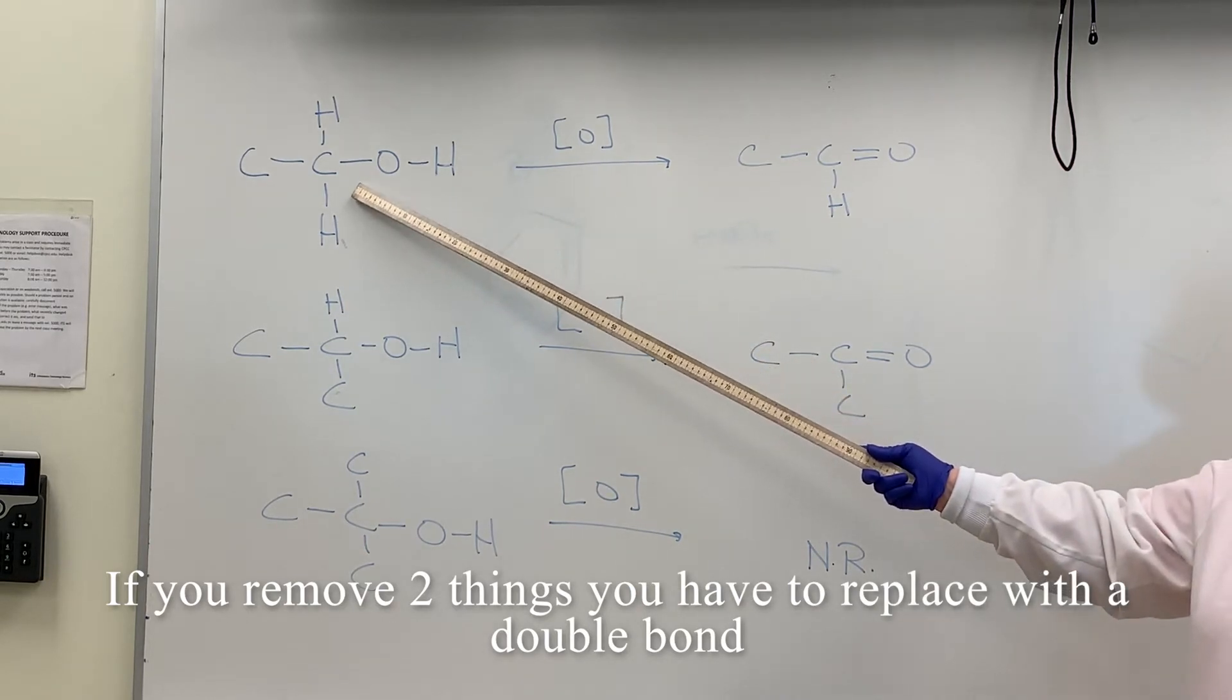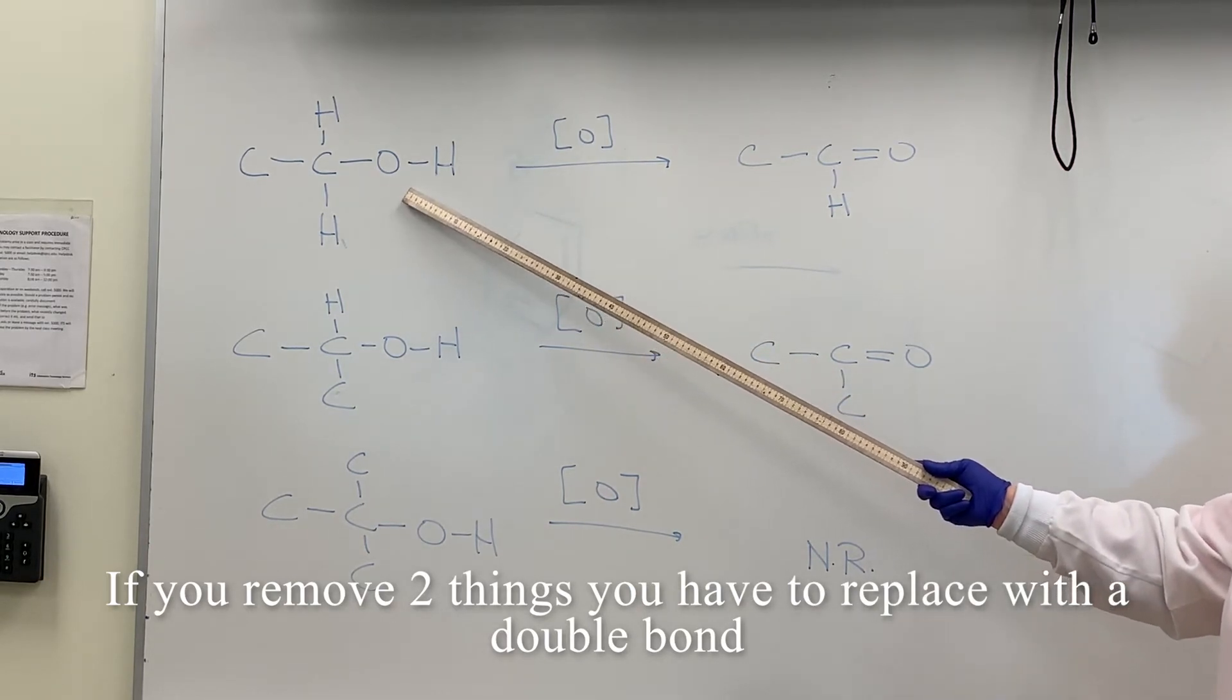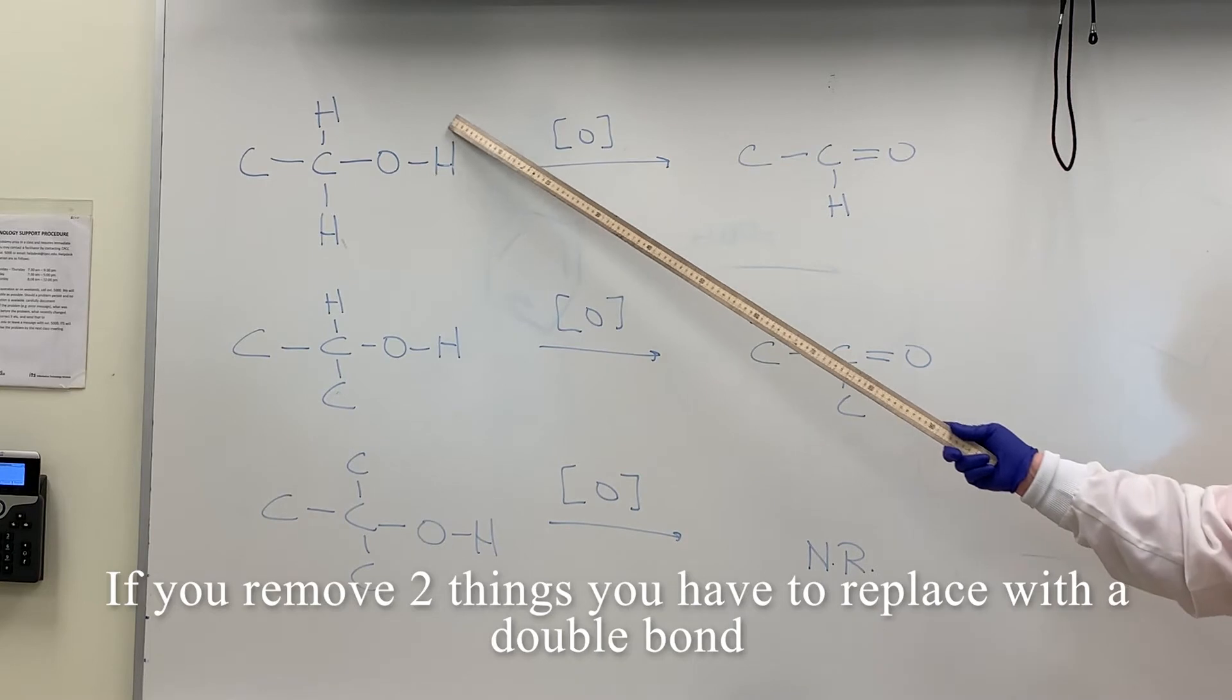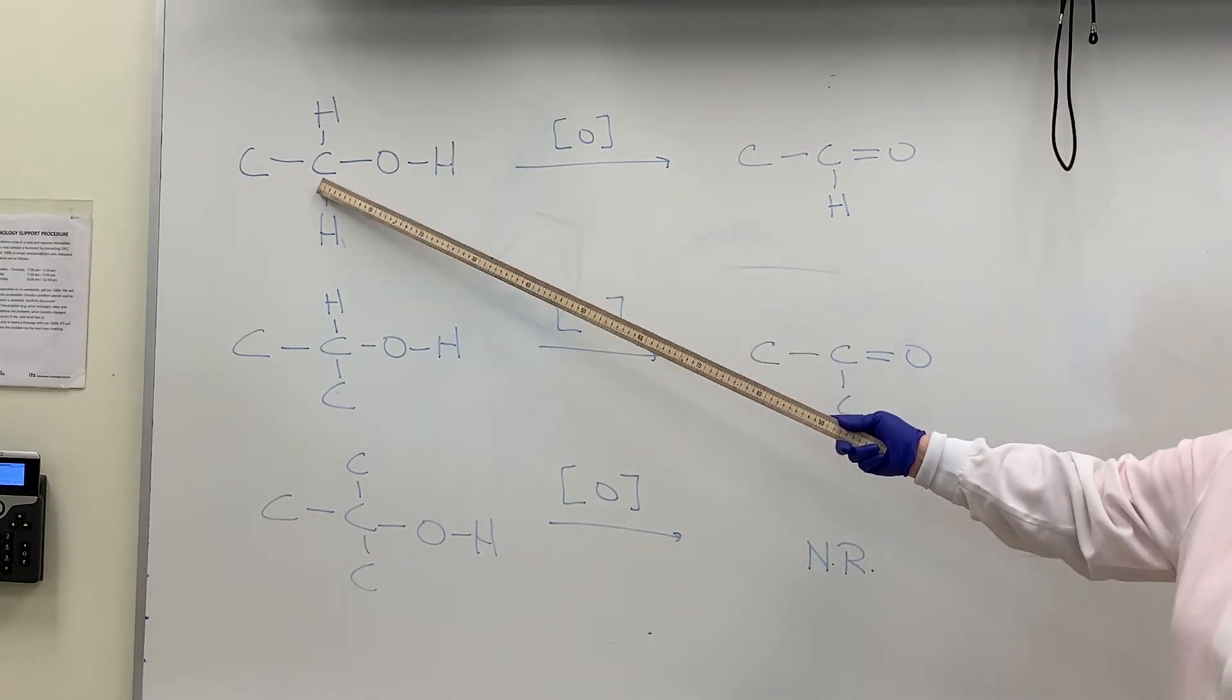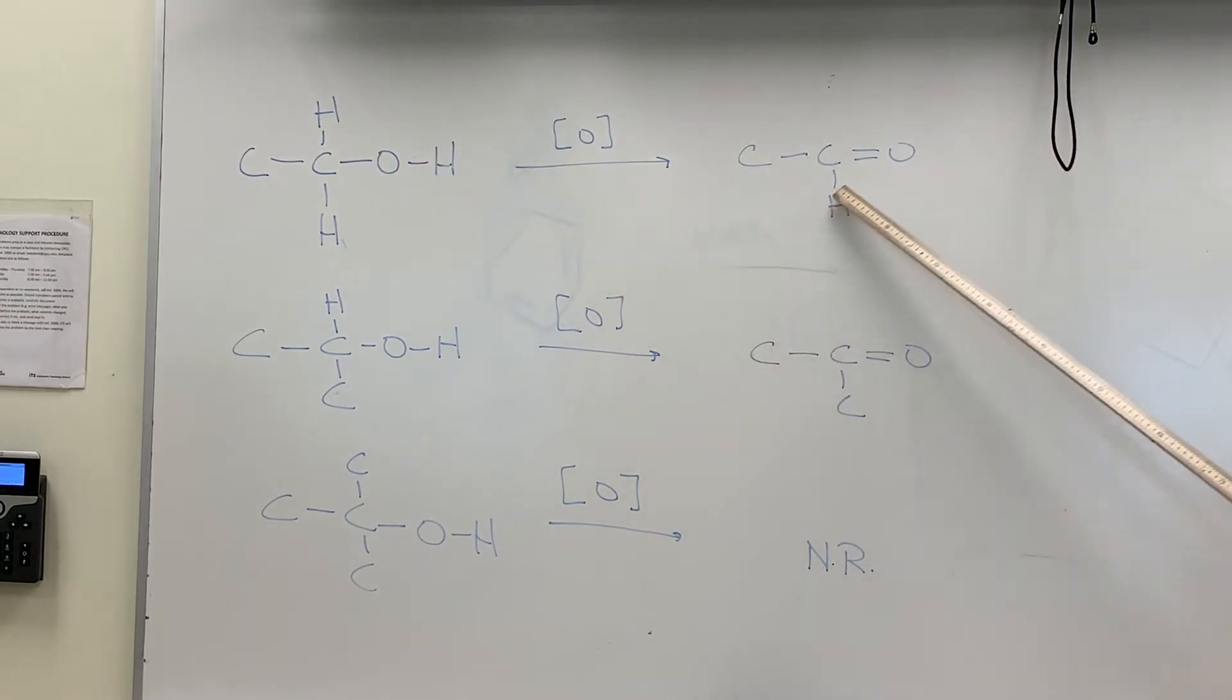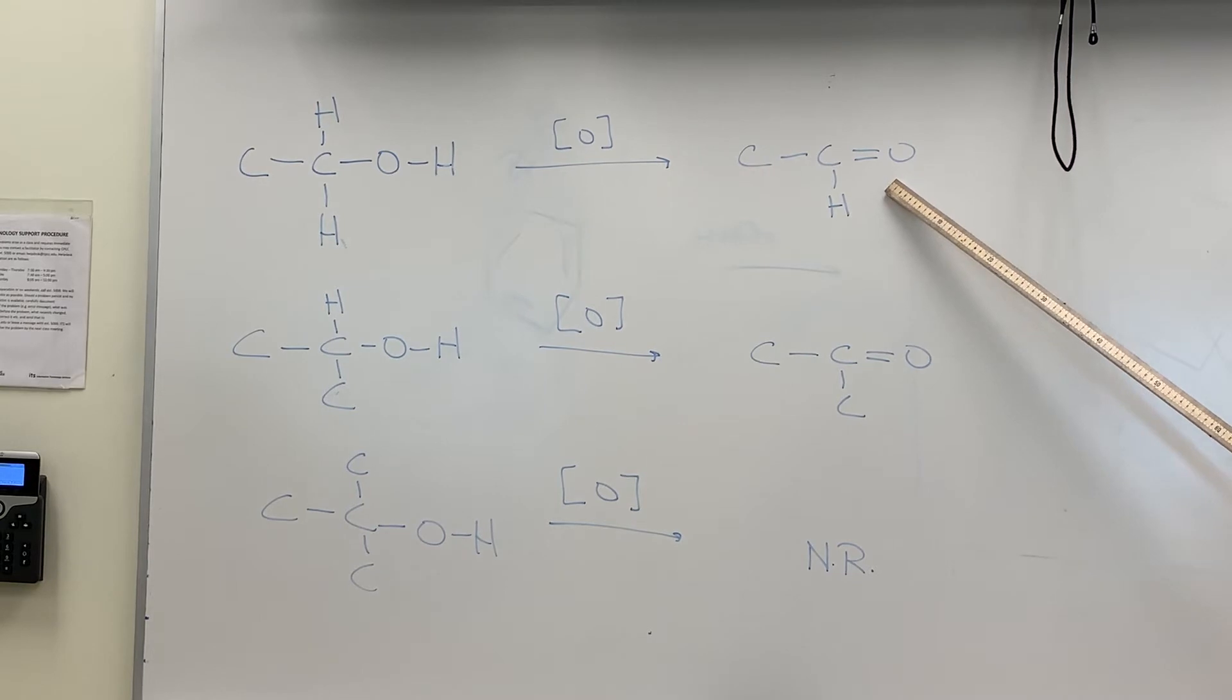Notice if I'm looking at this primary alcohol and I want to oxidize it, I'm going to take a hydrogen off the OH, take a hydrogen off the carbon bonded to the OH, and then compensate by forming a double bond. So the first product that we get is an aldehyde.